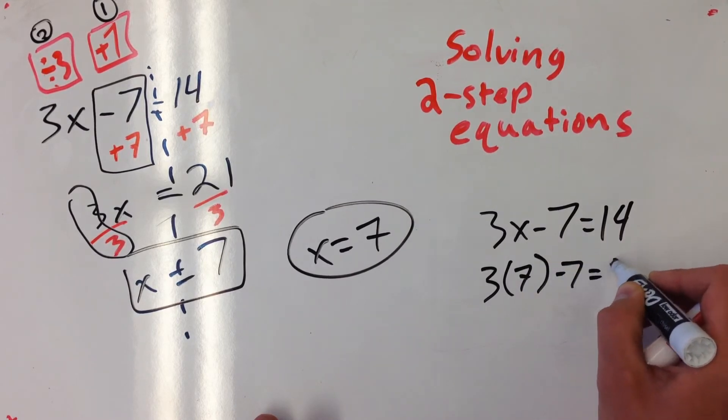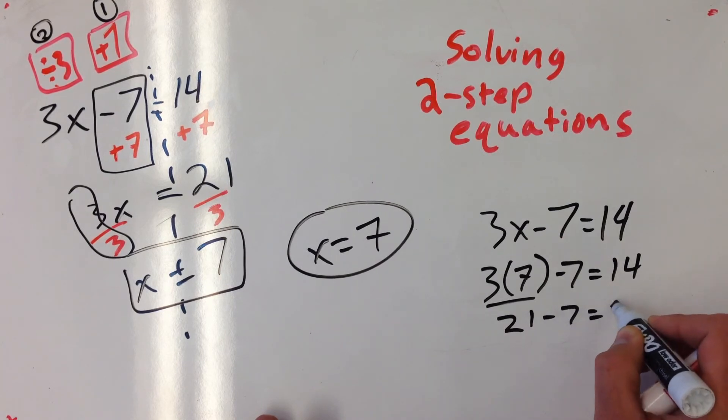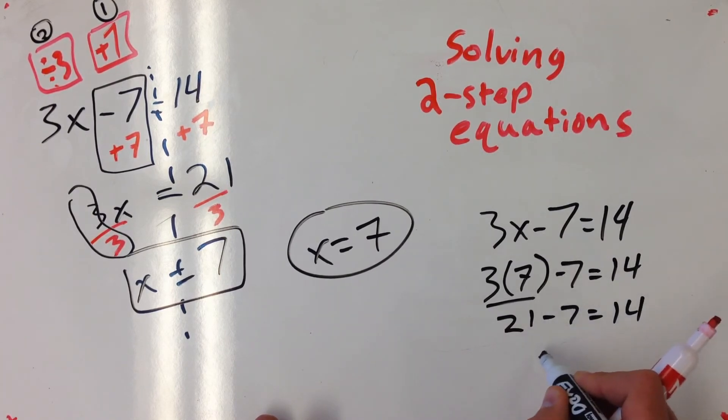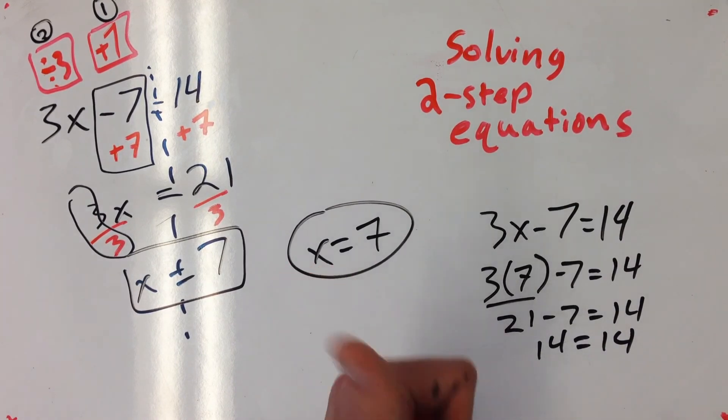I just plug in that 7. 3 times 7 is 21. 21 minus 7 is 14. Does 14 equal 14? Thumbs up.